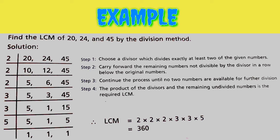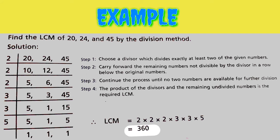So we calculate: 2 × 2 × 2 × 3 × 3 × 5 × 1 × 1 × 1. Finally, the LCM is 360.